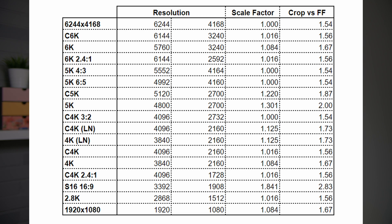If you want to see the numbers: the left column shows what appears in the menu, then we have the actual resolution, then the scale factor compared to Open Gate, which is 1x for me. Next to it is the crop factor comparison with normal full frame, meaning a 36 by 24mm sensor. One detail is that all of these crop factors are applicable if you're shooting at 25p. Up to 30p it will probably behave the same, but some resolutions may crop a little bit more at higher frame rates. If you're really interested in me doing this exercise with higher frame rates, please let me know.